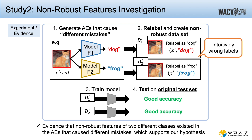To demonstrate this, we first generate AEs on the training set to cause different mistakes. Then we relabel every AE by either relabeling with the adversarial class for model 1, or relabeling with the adversarial class for model 2. Note that the constructed non-robust sets only consist of AEs and look completely mislabeled to humans. Finally, we train models on either of those non-robust datasets and test on the original test set. As a result, models generalize well to the test set, showing that non-robust features of two different classes existed in the AEs that caused different mistakes.